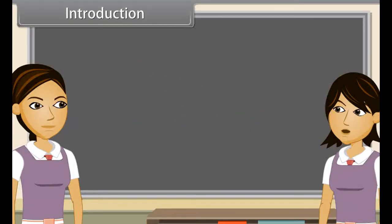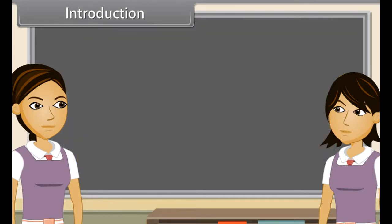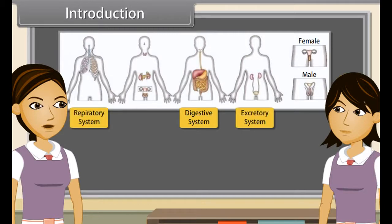The body of higher animals like man is formed of a number of organ systems. Some examples are digestive system, respiratory system, circulatory system, and excretory system.